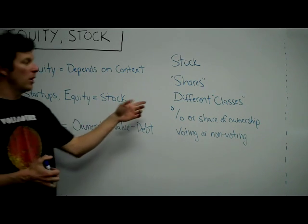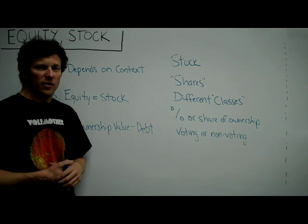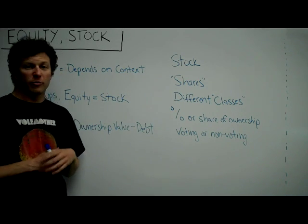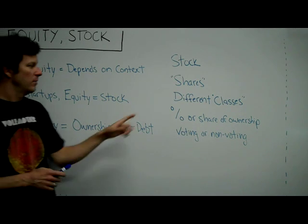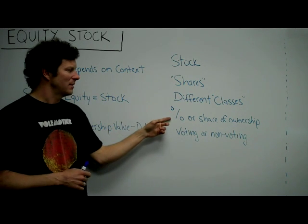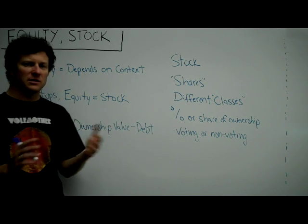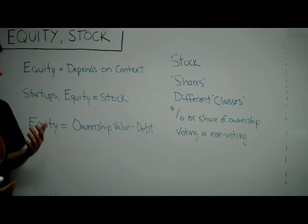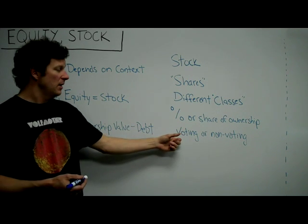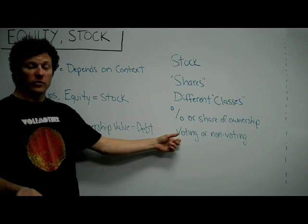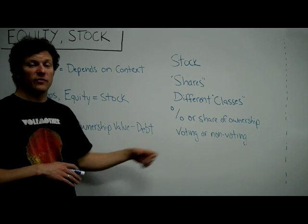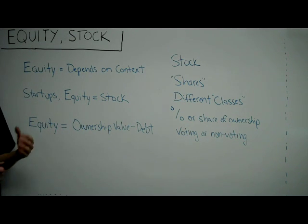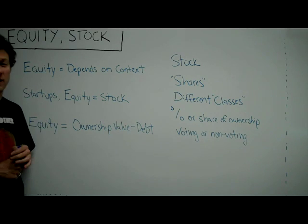As most of you know, stock comes in the form of shares. There can be different classes of stock — you've probably heard of preferred stock or common stock. The stock in each of those different classes has different abilities and powers associated with it. Sometimes they can be voting or non-voting — your preferred class could vote and your common stock might not. They have different liquidation preferences, meaning that the shareholders get paid when you sell the company. We'll go into those in more detail in another video.